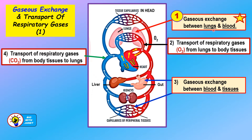Now let's discuss gaseous exchange between lungs and blood. This diagram shows three key places: the lungs, the heart — which pumps blood under high pressure to body cells — and below, the organs containing body tissues that use oxygen in respiration and produce carbon dioxide. Above the lungs are the tissue capillaries in the head and upper body. So the three key areas are the lungs, the heart, and the rest as body tissues.